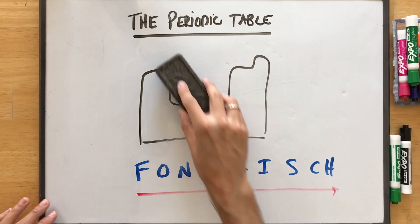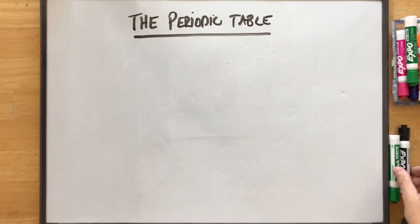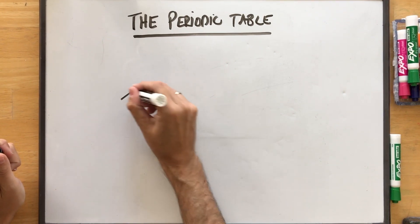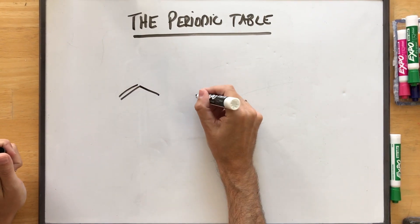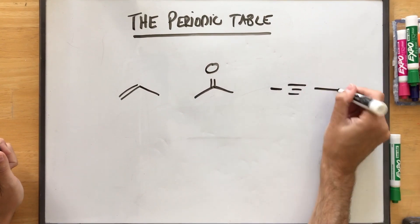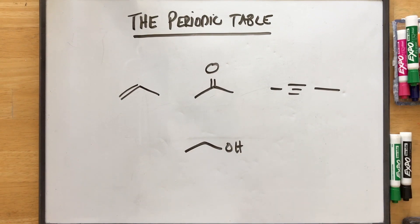Now I use the term functional group. What is that? So what's great about this is in your organic chemistry textbook, every single chapter is based off of a functional group. And a functional group is a part of the molecule that actually allows you to do something. So I'm just going to draw some on here.